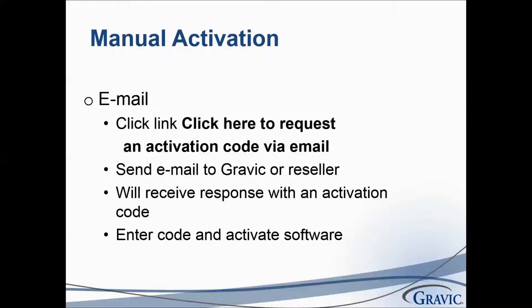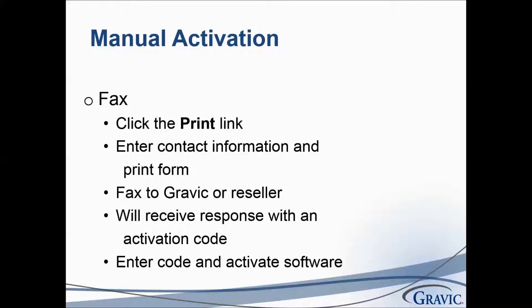The first manual activation method is email. In the manual activation process, you will see a link that says 'click here to request an activation code via email.' You can send the email to Gravic or your reseller, and once we receive the email you will receive a response with an activation code. There will be a prompt on the screen to enter this code. You may also fax your activation to us by clicking the print link in the manual activation window. You can fax the form to Gravic or your reseller, and once we receive the fax we will send you the appropriate activation code, which you can then enter into the software.